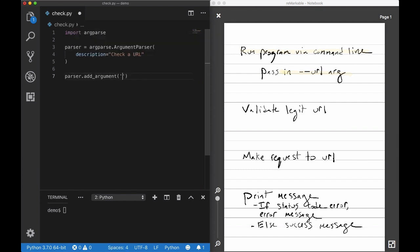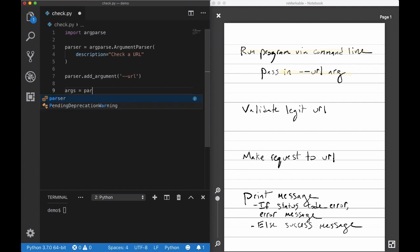and use it to create an argument parser. Next I'll add dash dash URL as a named argument.